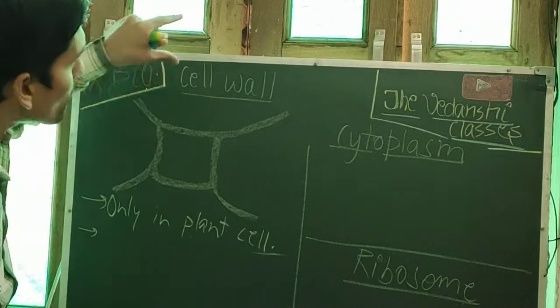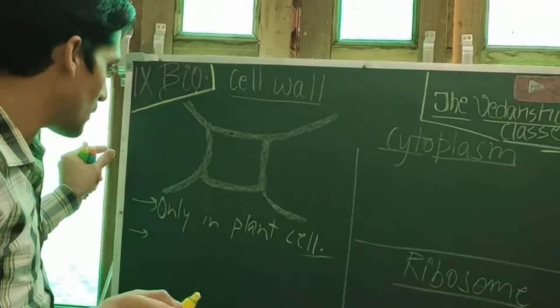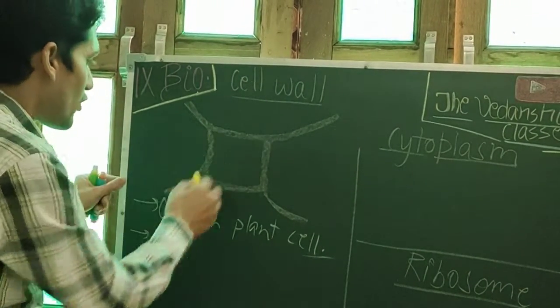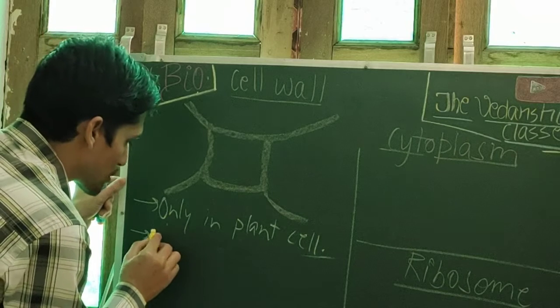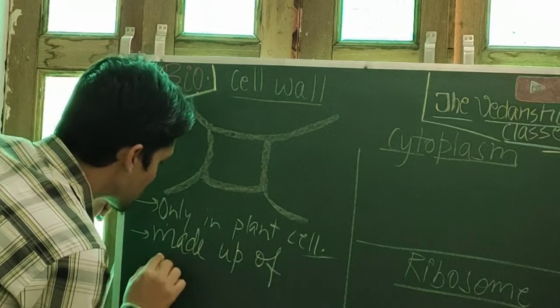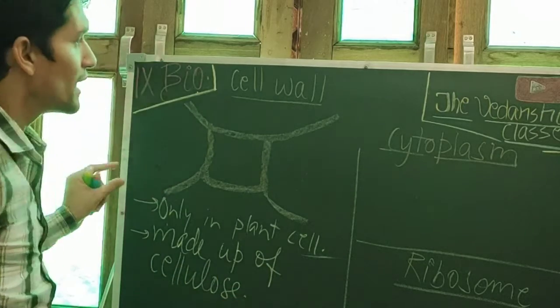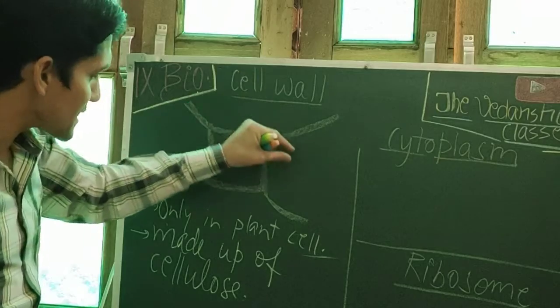Second thing, due to the presence of the cell wall, plant cell is harder than the animal cell. The cell wall is made up of cellulose. Cell wall is made up of cellulose.